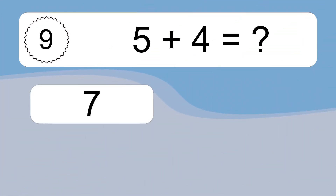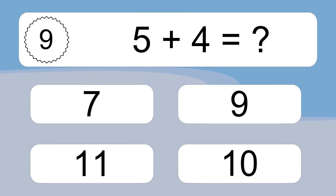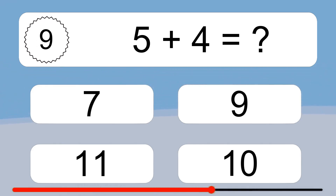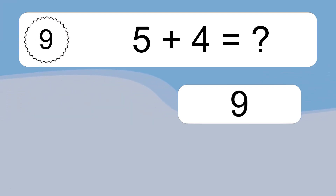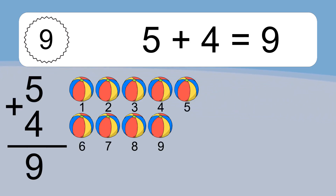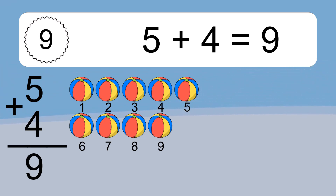5 plus 4 equals what? 5 plus 4 equals 9. Let's count it: 1, 2, 3, 4, 5, 6, 7, 8, 9.